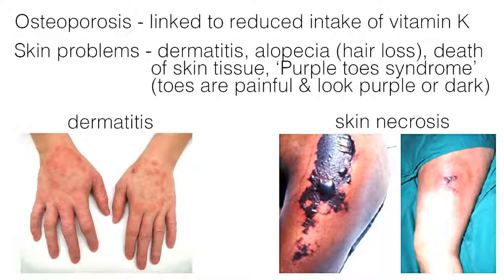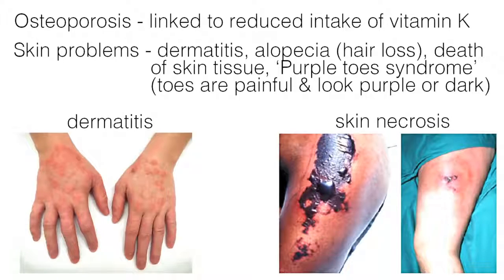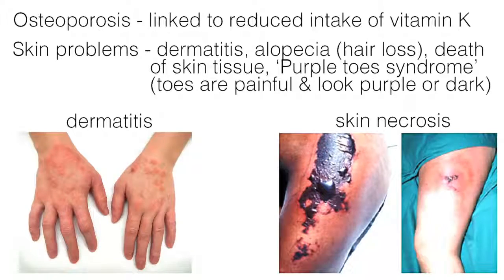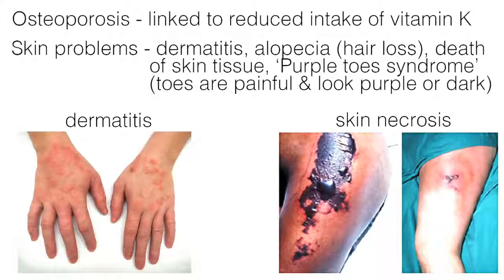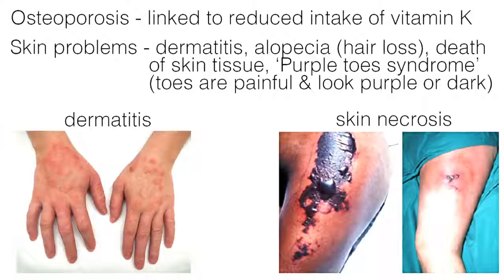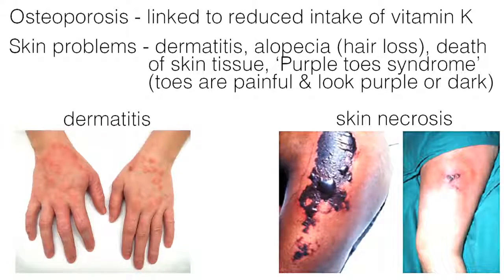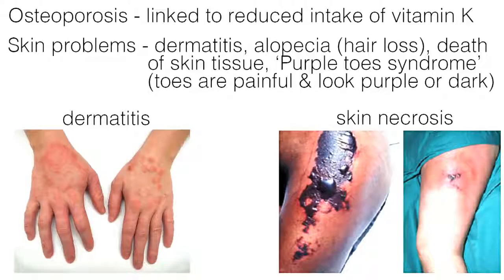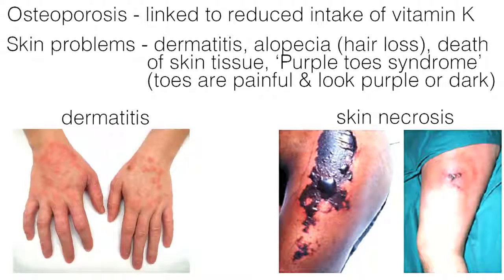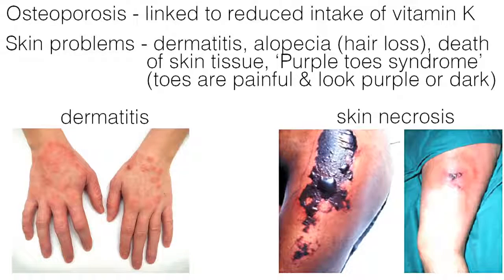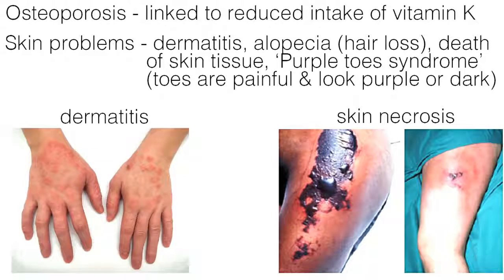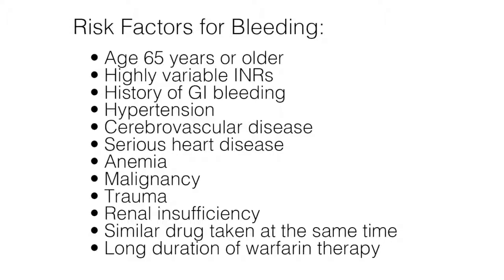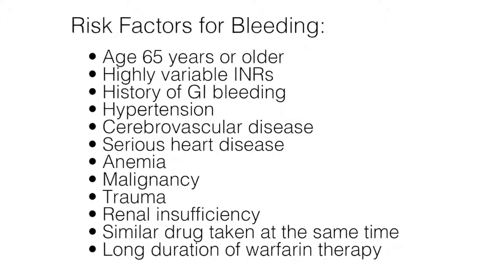Some less common adverse effects of Coumadin include the following. Several studies have shown a decrease in bone mineral density leading to osteoporosis, thought to be linked to a reduced intake of vitamin K, which is necessary for bone health. Side effects involving the skin include dermatitis, alopecia, which is hair loss, and purple toes syndrome, where the toes are painful and look purple or dark. Warfarin-induced skin necrosis is a rare but serious complication, usually occurring when warfarin treatment is initiated in a patient with protein C deficiency, which is a naturally occurring anticoagulant. Warfarin can cause major or fatal bleeding, which is more likely to occur when the medication is first started or if too much warfarin is taken.